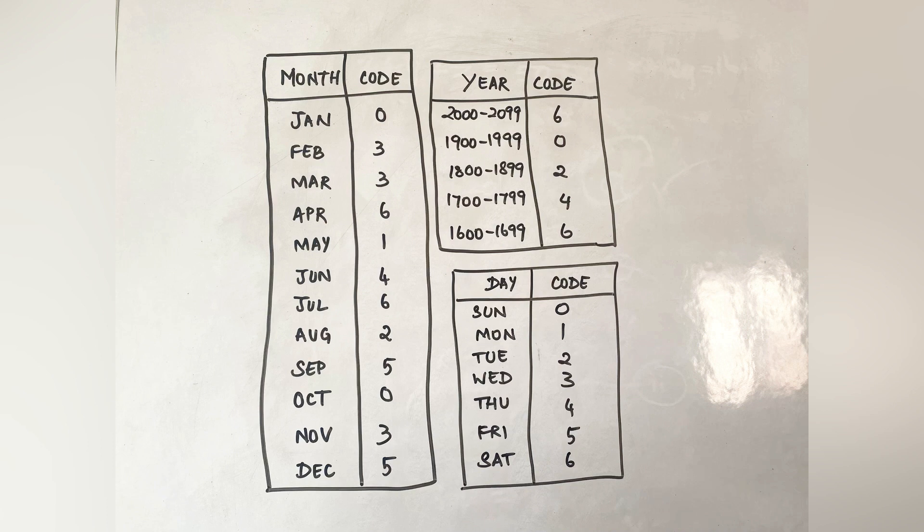In the day code, you can see that Sunday to Saturday is just from zero to six. The only thing that you need to by heart is the month codes. Please do take some effort to by heart this because this is going to save you a lot of time and it's a hundred percent accurate.